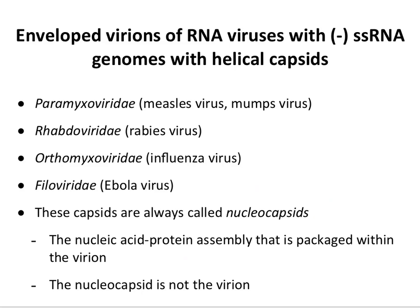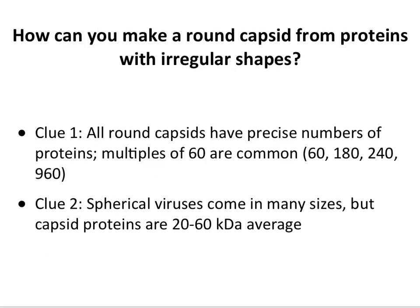A number of viruses have genomes with helical symmetry and they all have envelopes — there don't seem to be any animal viruses with just a naked nucleocapsid like TMV. Examples include paramyxoviruses like measles, rabies virus, influenza virus, and Ebola virus. These are always called nucleocapsids when they're within an envelope, whereas the TMV capsid — because it is the virion — would just be called a capsid.